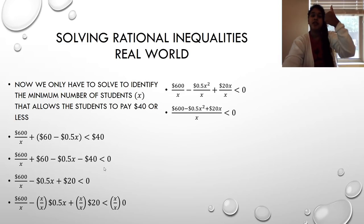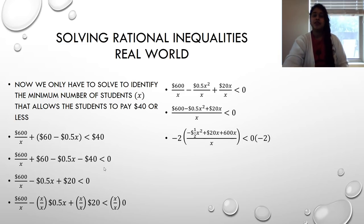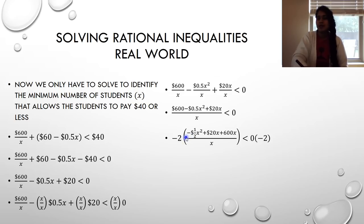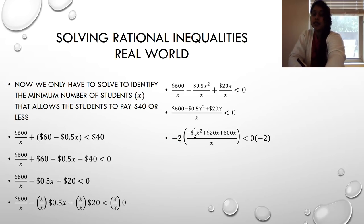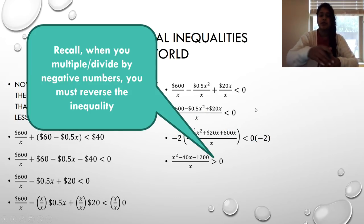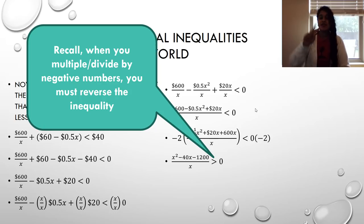Step two: simplify. I convert −0.5 to −1/2, then multiply everything by −2 to eliminate the coefficient. I distribute the −2 throughout — to each term in the numerator. Remember: when I multiply the inequality by negative 2, I have to flip the inequality sign. I apply it to both sides and the inequality sign flips.